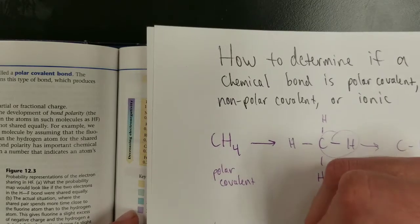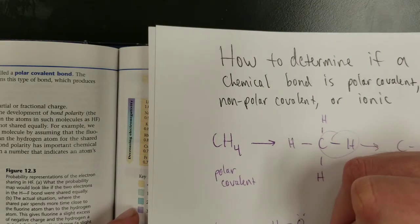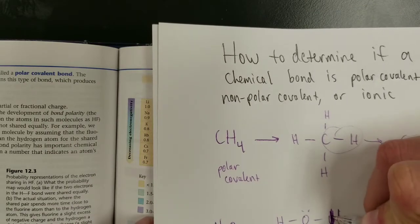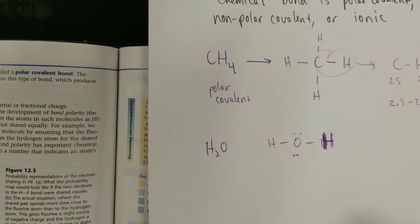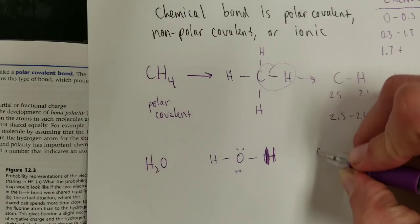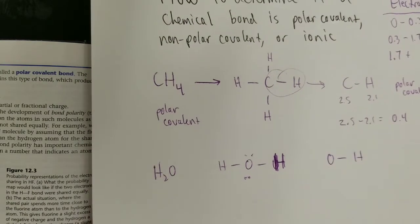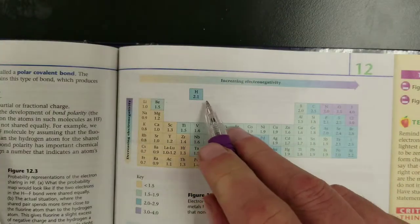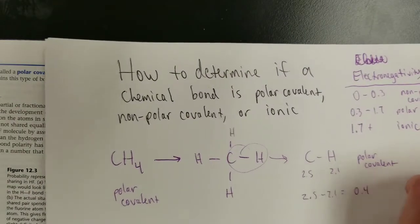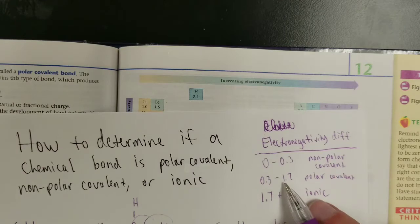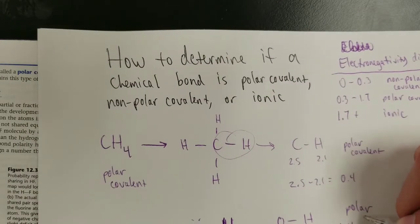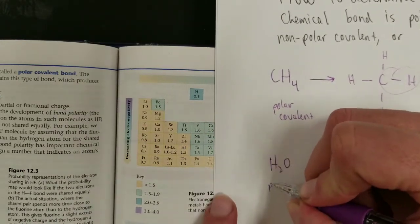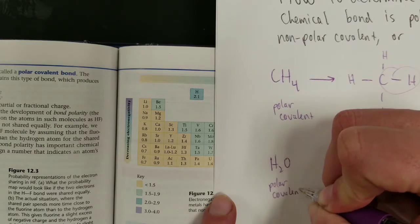H2O, as another example, is going to follow the same method. It's just two oxygen-hydrogen bonds. So, it's just two of these oxygen-hydrogen bonds. What's the value for oxygen? 3.5. What's the value for hydrogen? 2.1. So, you subtract the two, and you get a difference of 1.4, which, according to this, is definitely a polar covalent bond, which means the molecule having two of the same sort of bond is a polar covalent molecule.